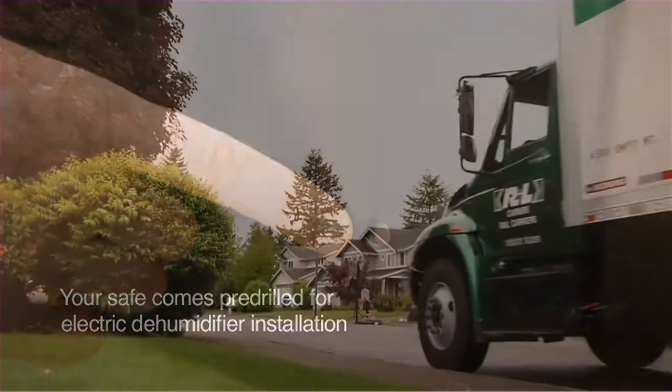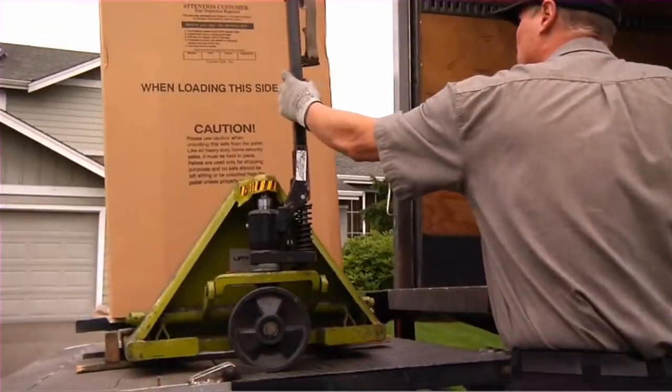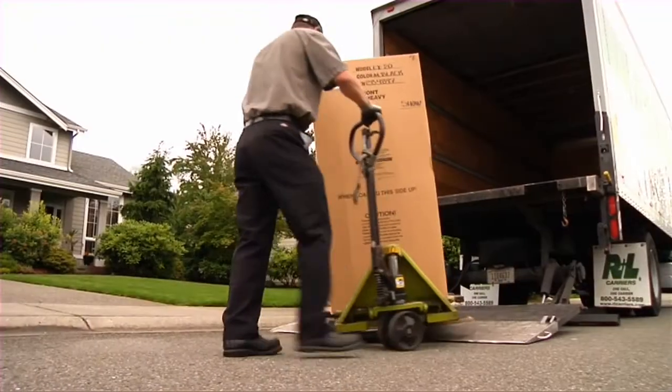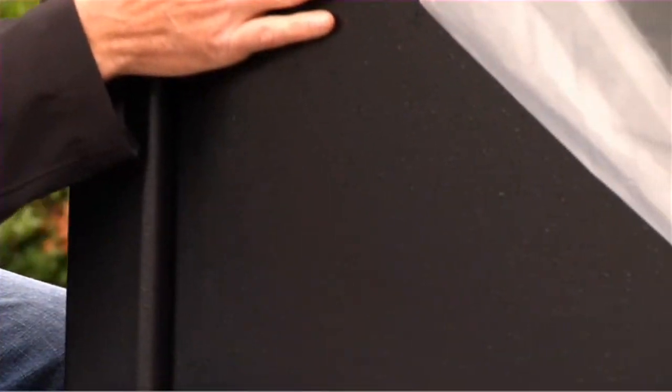Your new Bighorn or Rhino safe will be delivered curbside to your specified address by a liftgate truck. The driver will take the safe off the truck and you will be able to inspect the safe for any damage, which should be noted on the bill of lading prior to signing for delivery.